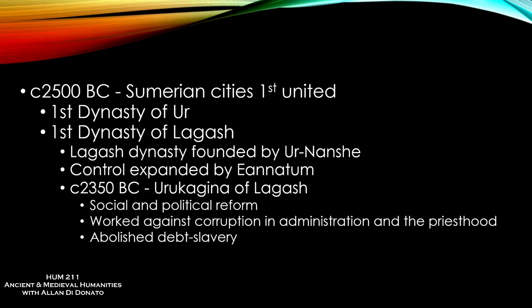Around 2500, you see some early unification in Sumeria with the rise of Ur and Lagash. In this period it's worth noting Urukagina, who left records of early social and political reform. We don't tend to think of reformers when it comes to ancient politics, but it's been around from the very beginning. There was already corruption — as soon as you get cities, politics, and religion, you often have corruption along with that, because when people are in positions of power, that power can be abused.